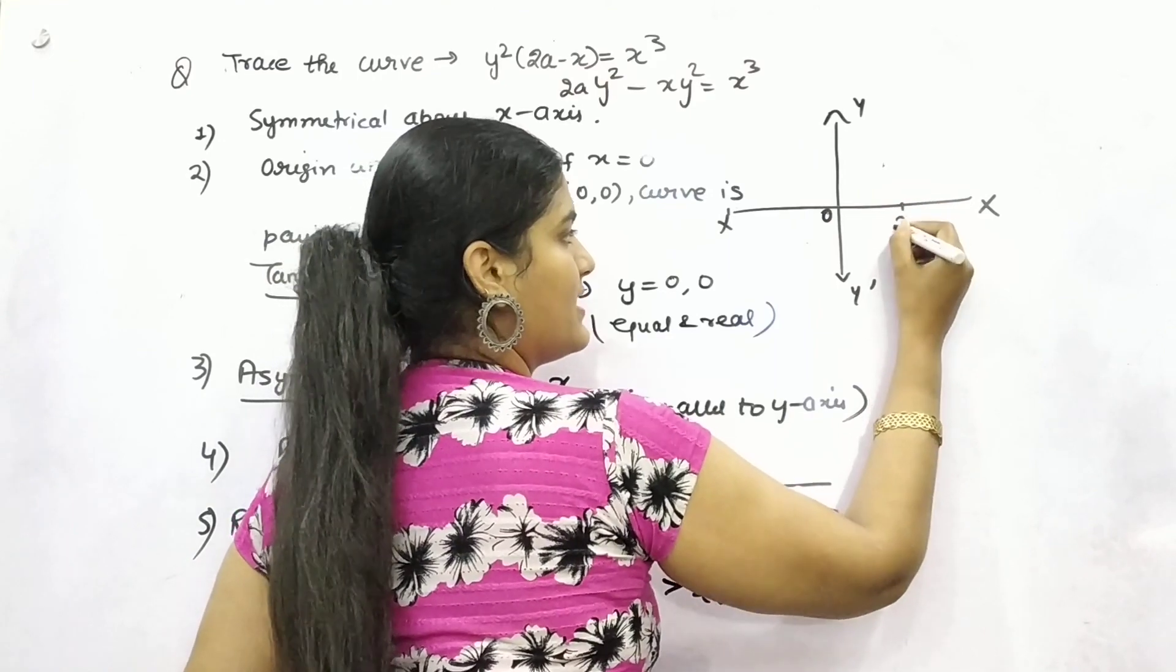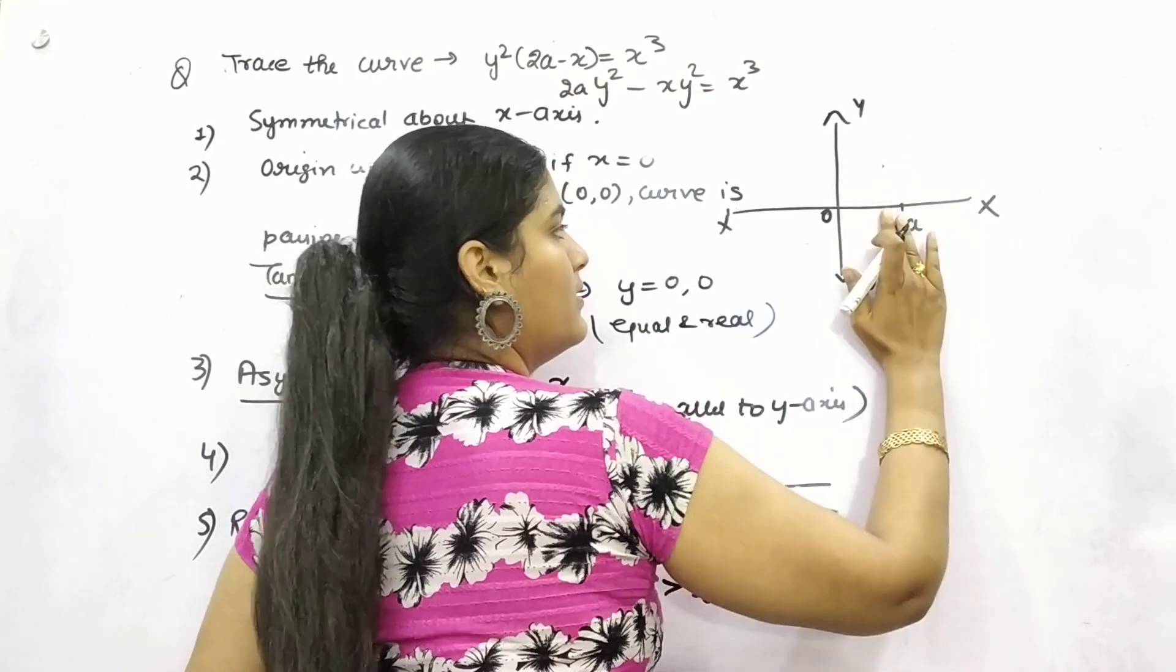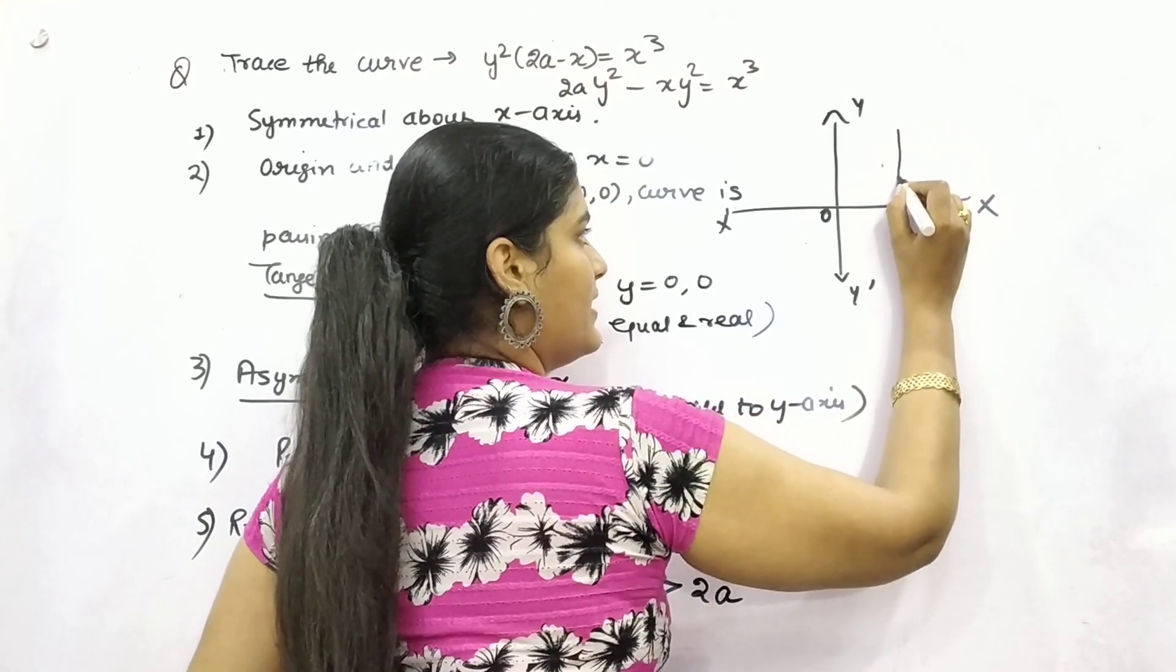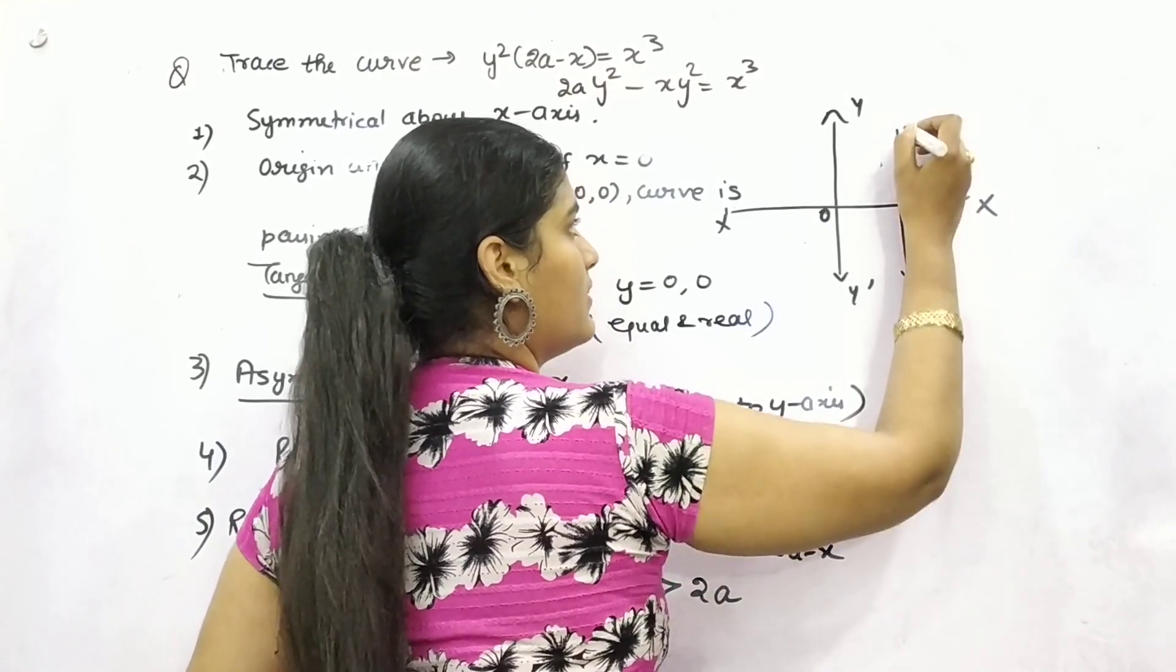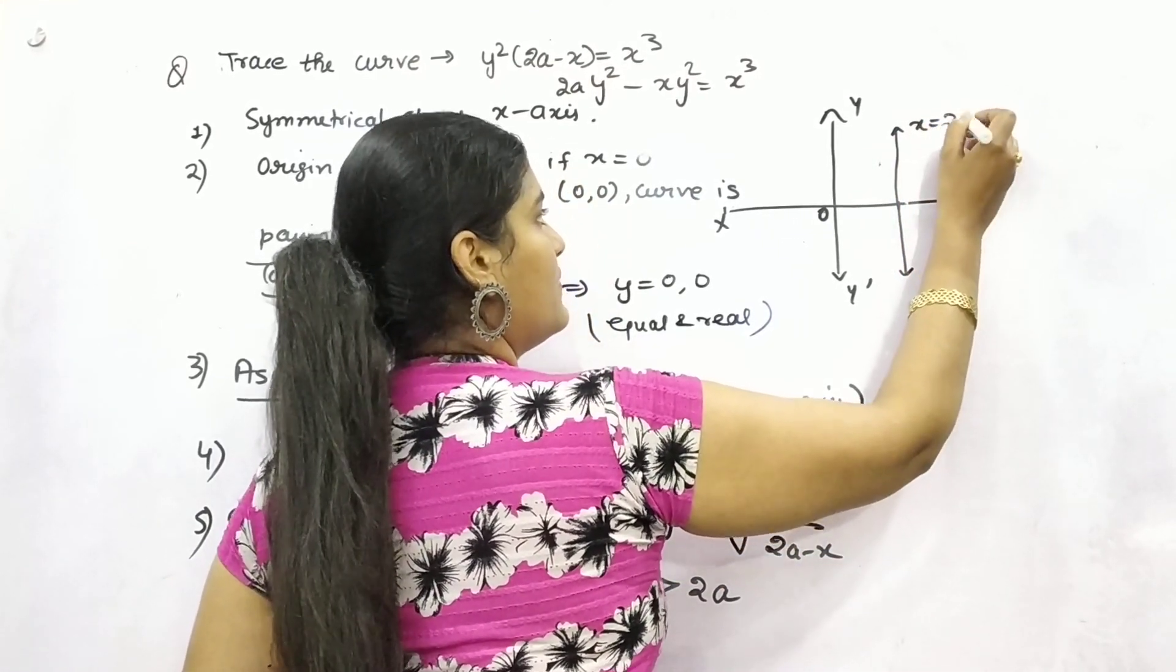So first of all, your asymptote x = 2a. Let's say on x-axis, this is your 2a point.